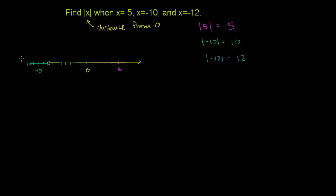And we could draw it over here. This negative 11, negative 12 is right over here. It is 1, 2, 3, 4, 5, 6, 7, 8, 9, 10, 11, 12 away from 0.